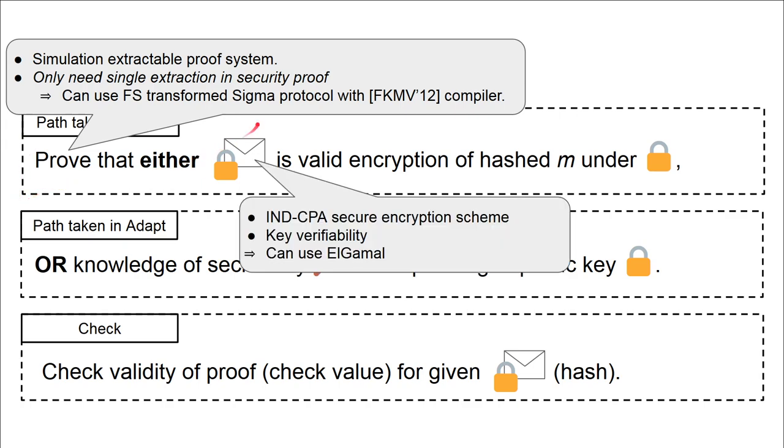For the used encryption scheme, we require two major properties. The first one is IND-CPA. The reason we only require IND-CPA is that we never decrypt anything. Also, but this is a formality, key verifiability. Key verifiability means you can prove knowledge of a secret key belonging to some public key, and that once you can prove knowledge of a secret key, that secret key decrypts all ciphertexts to the same value. It's a formality; formal definitions are in the paper. For this talk, think ElGamal, period.